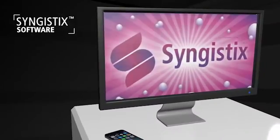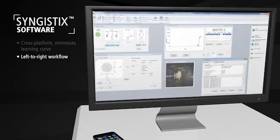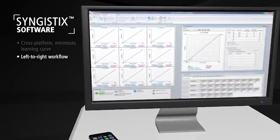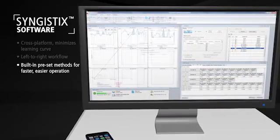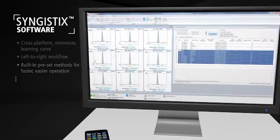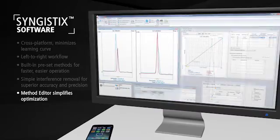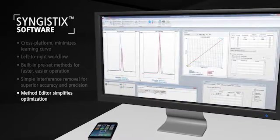From day one, Avio 200's powerful cross-platform software, Syngistics adapts to, and advances, your workflow. Syngistics software arrives with several preset methods for a range of applications, as well as robust tools to automate interference correction, effortlessly reducing method development and optimization times by 52%.